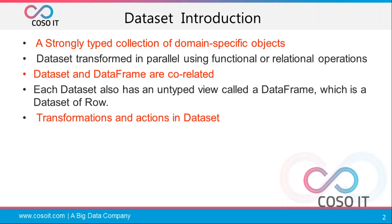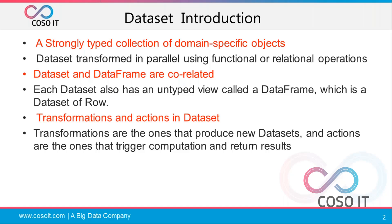Dataset supports both transformations and actions, and transformations use lazy evaluation. When a transformation happens on a particular Dataset, it produces a new Dataset — it does not change the old Dataset. If a Dataset fails in the middle due to a node failure, it can reproduce that Dataset from the older Dataset. An action is a trigger of computation that returns results to your driver program. These concepts are similar to RDD and DataFrame.